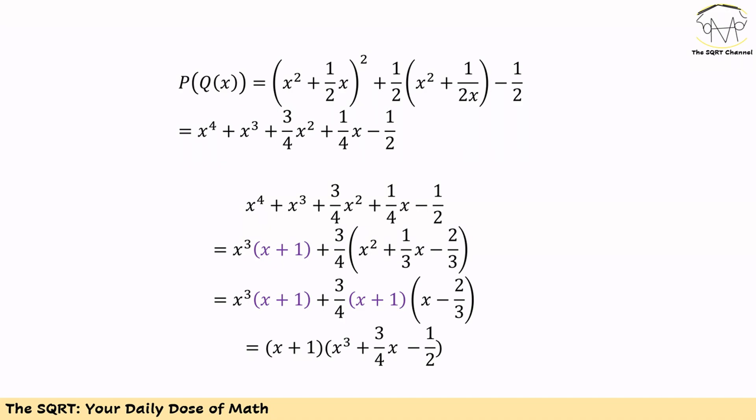Now we need to find the roots of P(Q(x)). Since this is a degree-4 polynomial, we cannot simply apply the quadratic formula — we need to factor. We group the first two terms and factor out x³ to get a factor of (x + 1). For the last three terms we factor out (3/4), and simplifying further we can again factor out (x + 1).